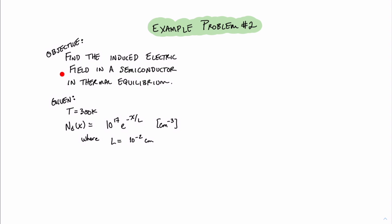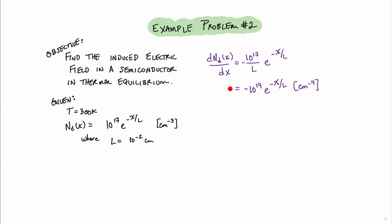In our next example problem, we are again going to find the induced electric field in this semiconductor while it's in thermal equilibrium. We'll consider the temperature to be 300 degrees Kelvin, and the concentration profile is given as an exponential equation. Again, the first step in solving this problem is to find the derivative of the concentration profile N_d(x). Since this is an exponential function, we know that the derivative of an exponential is the constant out in front times the exponential itself. In this case, that'll be minus 1 over L times the exponential itself. Substituting L equals 10^-2, we can simplify this equation.